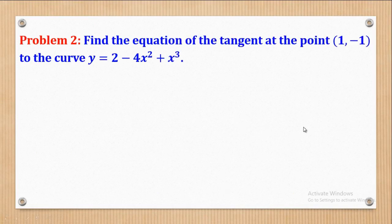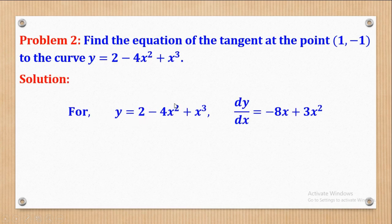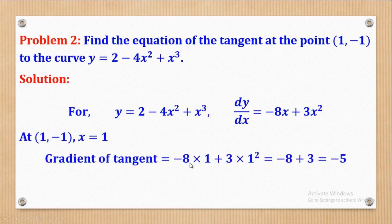Problem 2 says: find the equation of the tangent at the point (1, negative 1) to the curve Y equal to 2 minus 4X squared plus X cubed. The first thing to do is differentiate: dy/dx equals 0 minus 8X plus 3X squared. At point (1, negative 1), X is equal to 1. Substituting that value in gives the gradient of the tangent as negative 5.